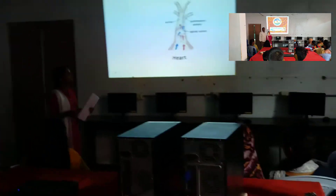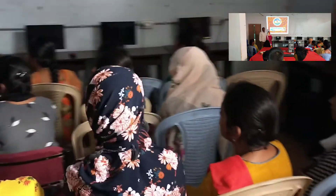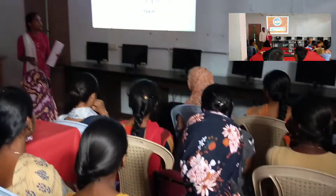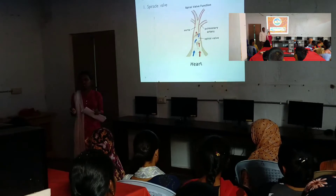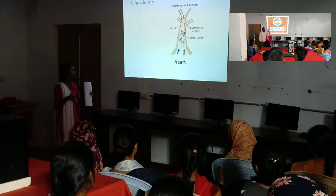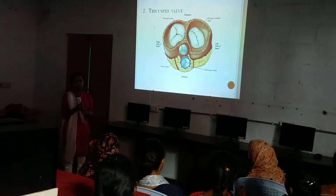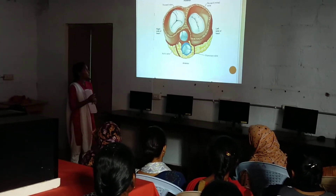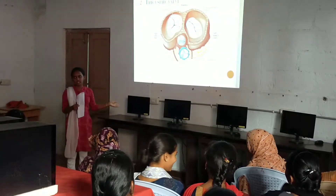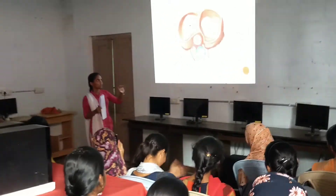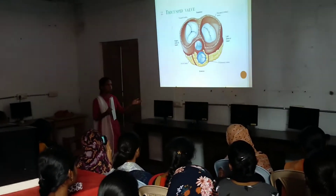The spiral valve is located at the opening of the sinus venosus to protect the backflow of blood from the right auricle to the vena cava. The tricuspid valve is located at the right side of the ventricles to prevent backflow of blood from the right ventricle to the right auricle.